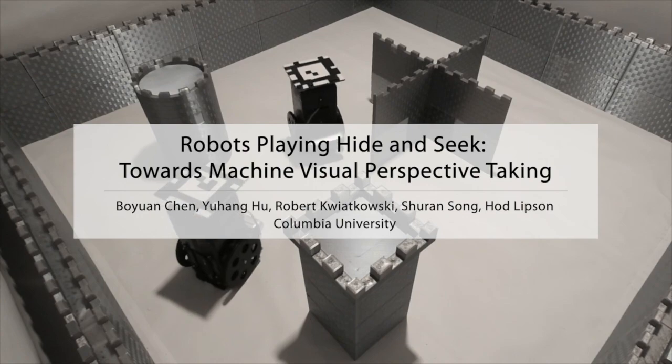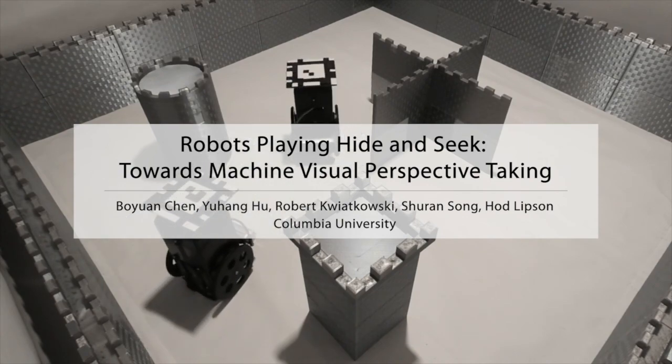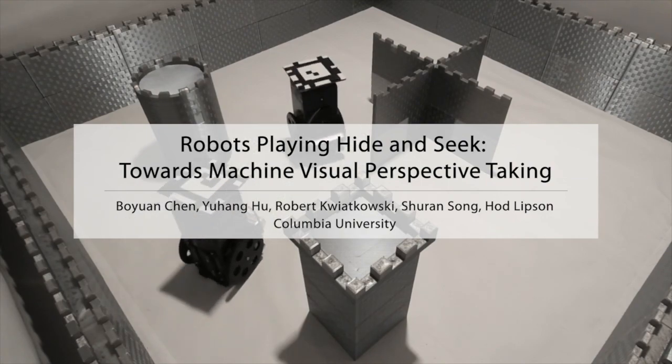With explicit visual perspective taking and implicit behavior modeling, we suggest that robots can achieve effective and interpretable motion planning in real-world multi-agent interaction tasks.